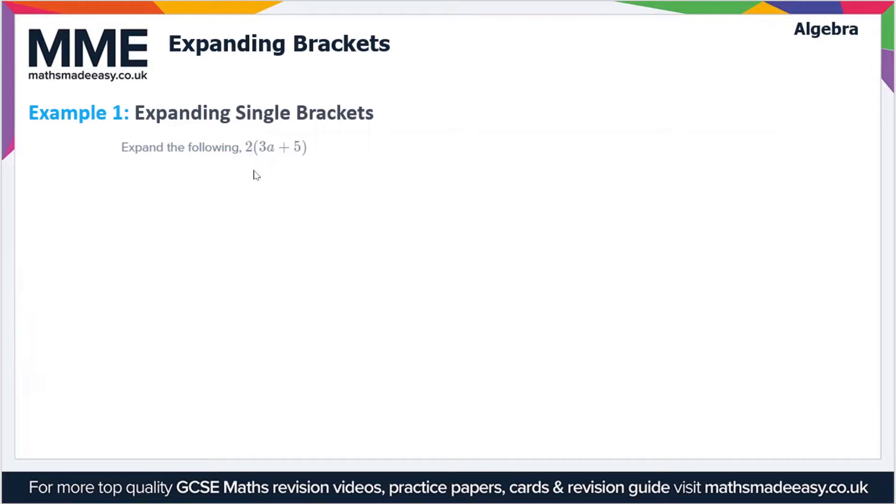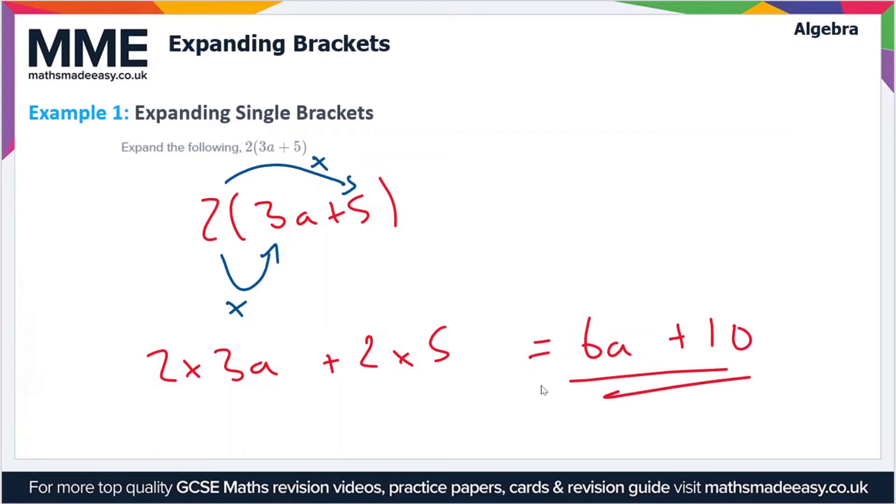Here we have 2(3a+5), and again we're going to use the same technique. We multiply the 2 by the 3a and the 2 by the 5, so this gives us 2 times 3a plus 2 times 5, which simplifies to 6a+10.